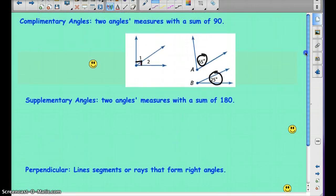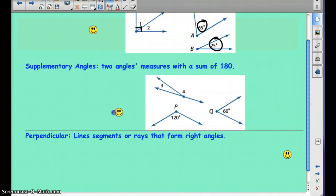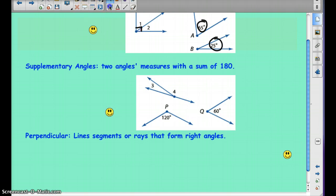Okay, supplementary. Again, pause the video when needed. Supplementary two angles measures with a sum of 180. So they add up to 180. So notice that when we put them together, like so, we have 180 here. They make a straight line, just like the linear pair. So linear pair is 180, so the linear pair would also be supplementary. And they add up to 180 as well.